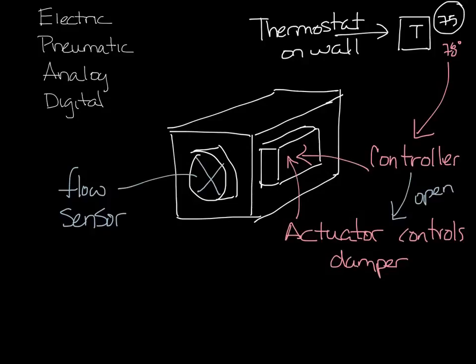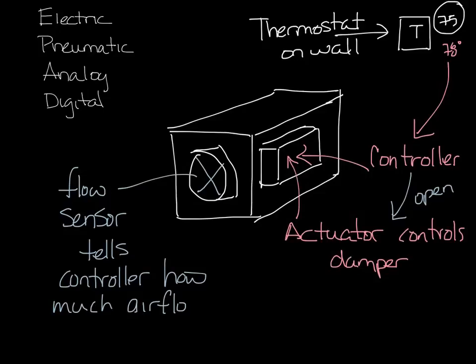This whole time the flow sensor is measuring the air flow in the box so that it gets the right amount of air flow regardless of what the pressure is in the system itself. So that's a super simplified view of the operation of the controller, actuator, flow sensor and thermostat. Obviously you can have reheat and other things controlled by the controller but that gives you the basic idea.